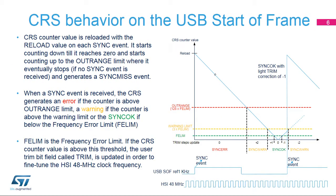The CRS counter value is reloaded with the reload value on each sync event. It starts counting down till it reaches zero, then it starts counting up to the outrange limit, where it eventually stops if no sync event is received before, and generates a sync miss event.